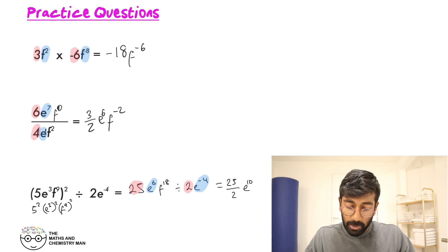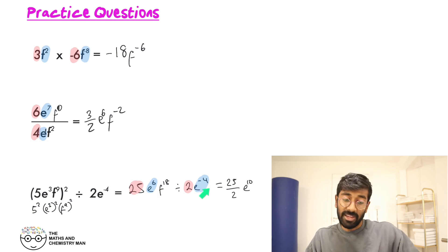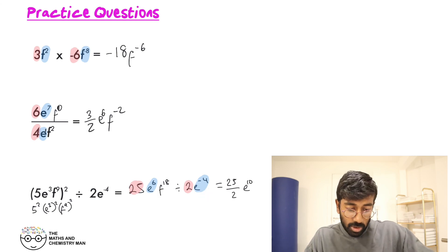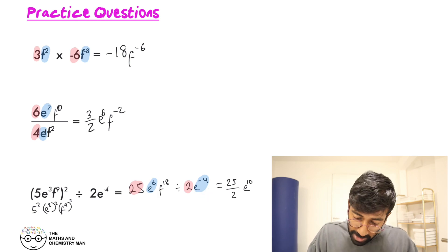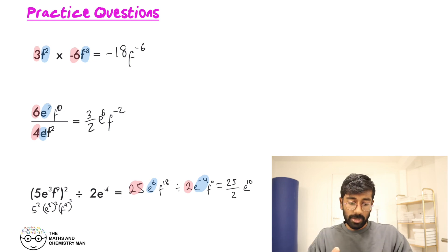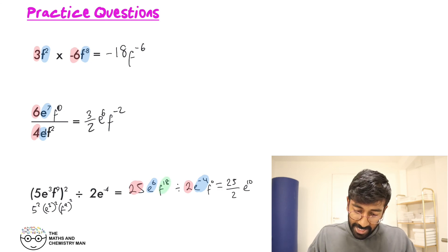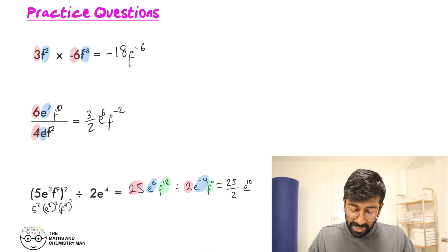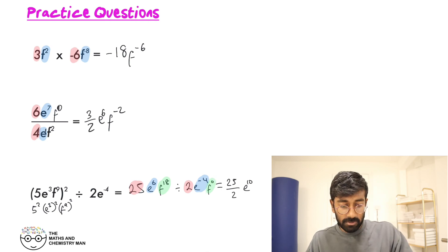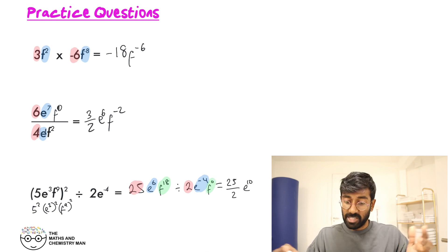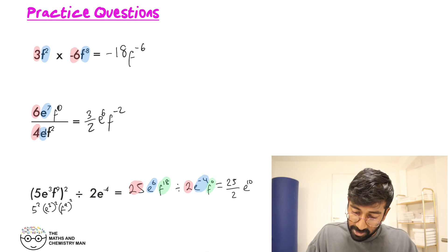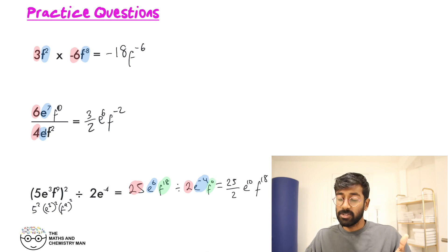And now the F's — you've got a power of F here but no power of F on top. If you want, put in F to the power of 0, and then F to the 18 divided by F to the 0 is just F to the 18, because you're doing 18 take away 0.